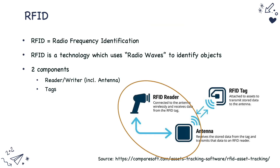RFID stands for Radio Frequency Identification. RFID is a technology that uses radio waves to identify objects. This technology has two important components. One is a reader and writer object, and the second one is an RFID tag. The RFID tag refers to the items that are to be identified or tracked.